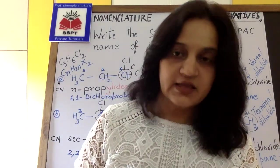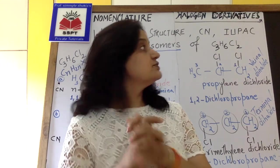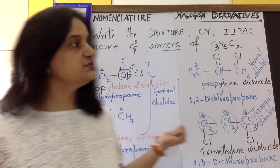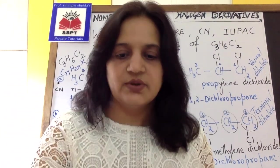So with this we concluded that we can make four isomers of C3H6Cl2. The four isomers with their structures, their common name and their IUPAC name is done. Okay, bye-bye. Take care. Stay blessed. Love and blessings.